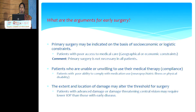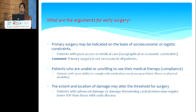What are the arguments for early surgery? Primary surgery may be indicated on the basis of socio-economic or logistic constraints. Patients with poor access to medical care due to geographic or economic constraints, and patients who are unable or unwilling to use medical therapy due to neuropsychiatric illness or physical disability, may be considered for primary surgery. The extent and location of damage may also alter the threshold for surgery — patients with advanced damage or damage threatening central vision may require lower IOP than those with early disease.